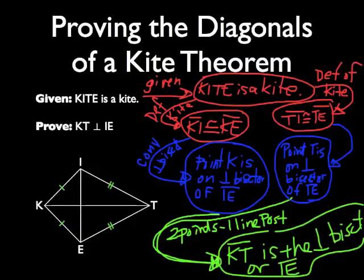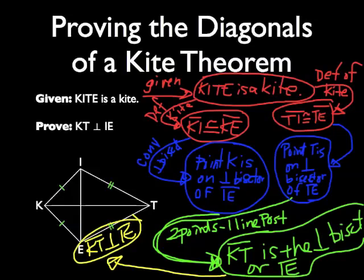And hence, by definition, segment KT is perpendicular to segment IE. A quick and easy proof.